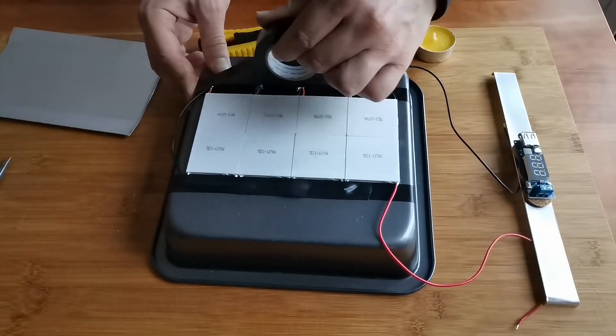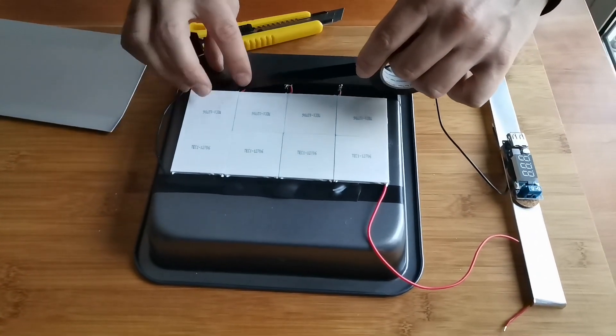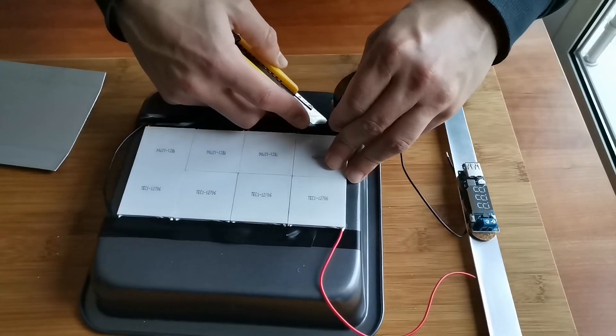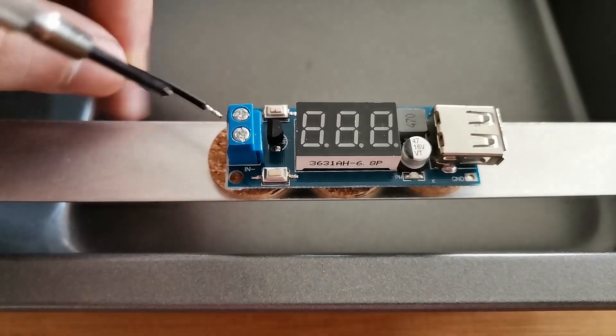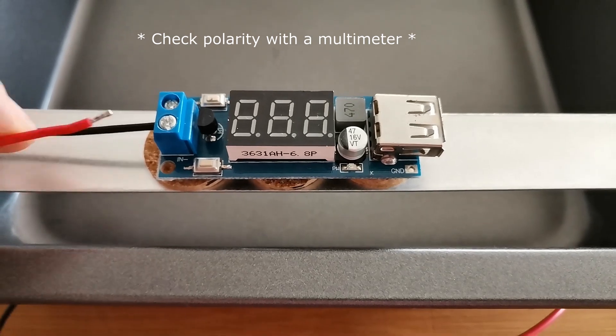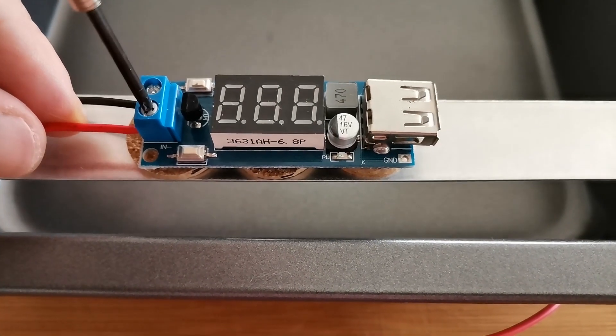I would advise you to put some more insulation tape over the solder links. Because of the way the plates were glued, the polarity is inverted. So we need to connect the black wire to the plus terminal and the red wire to the minus terminal.